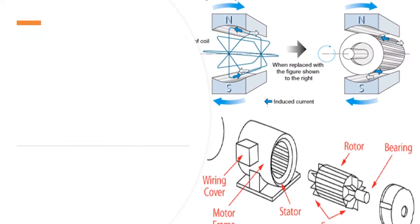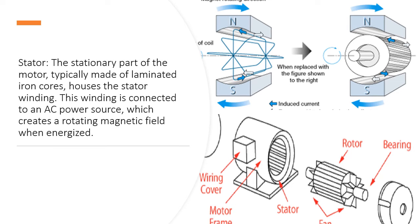Stator: the stationary part of the motor, typically made of laminated iron cores, houses the stator winding. This winding is connected to an AC power source, which creates a rotating magnetic field when energized.